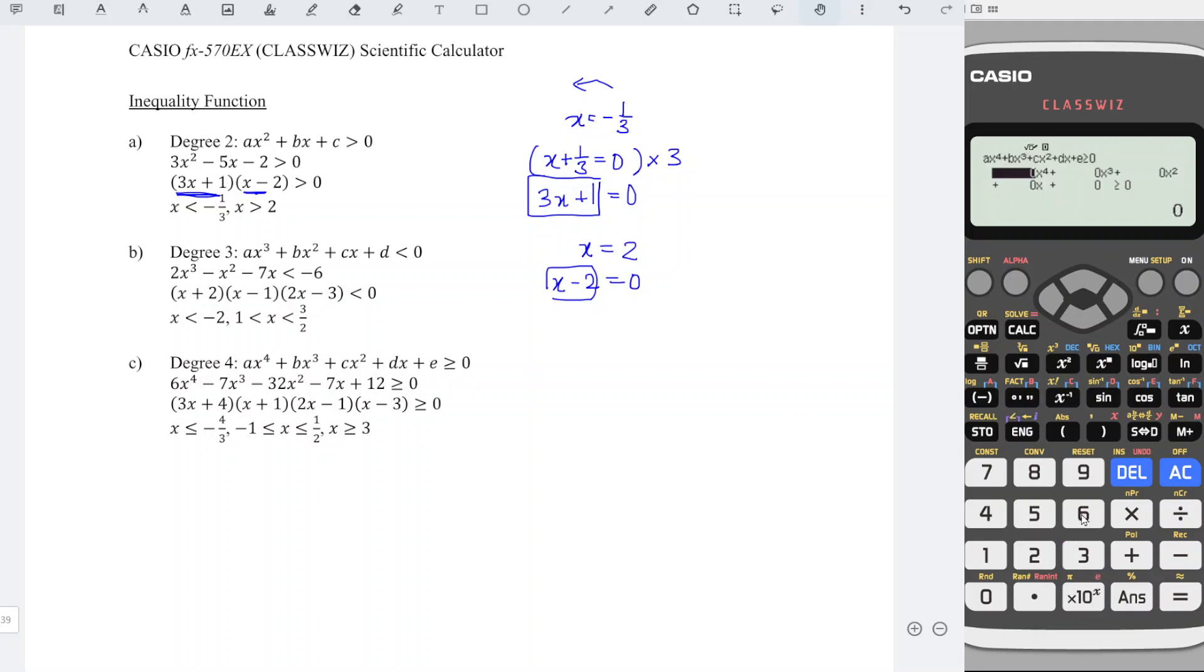And the values accordingly: 6x⁴ minus 7x³ minus 32x² minus 7x plus 12 more than or equal to zero.